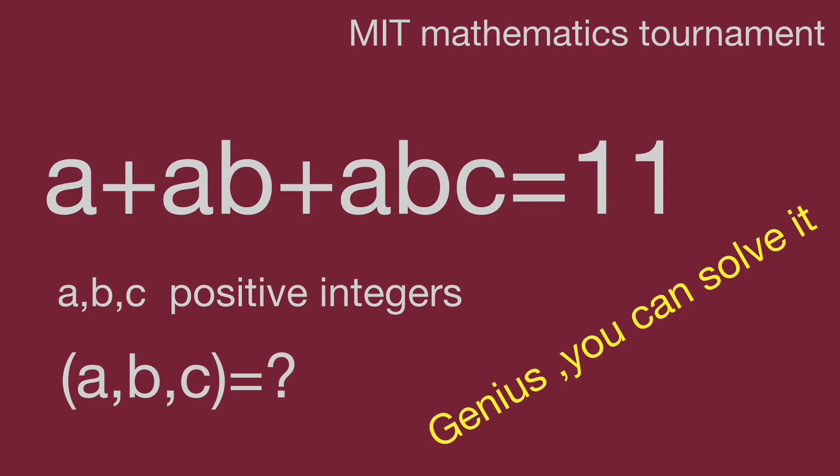ABC are positive integers. Then a plus ab plus abc equals 11. Find the number group for abc. Would you please find them?